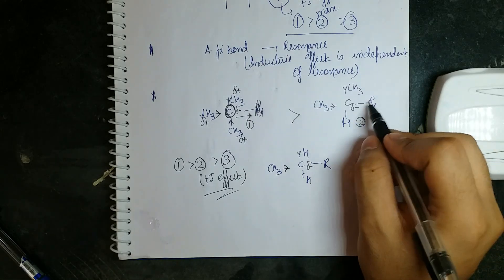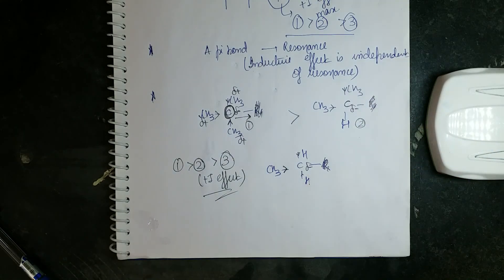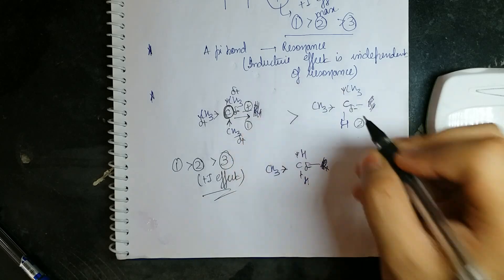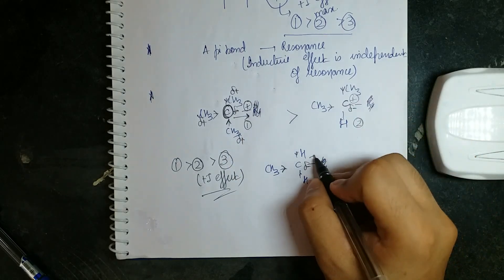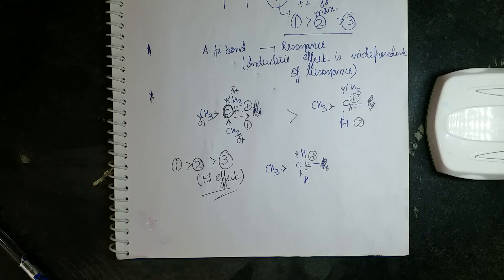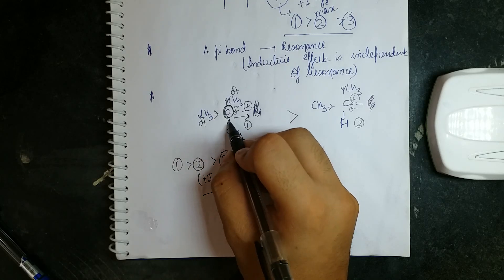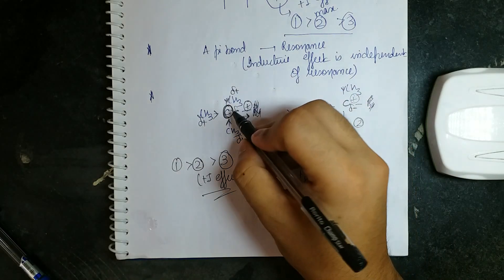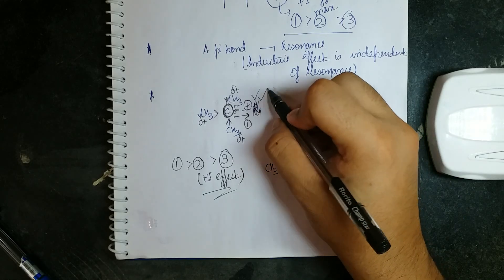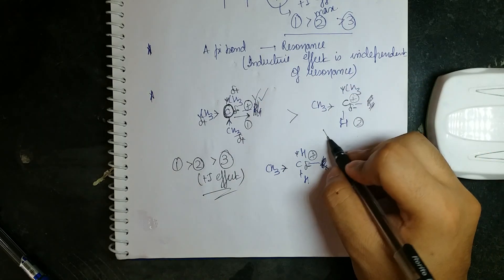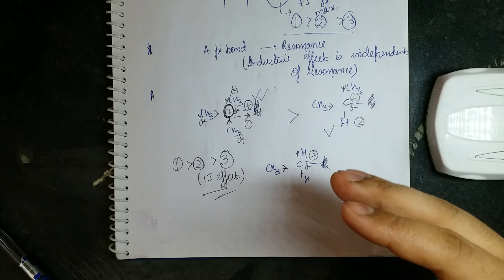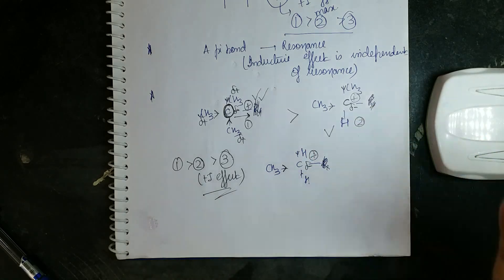Removing the R group and placing a positive charge: a positive charge is electron deficient, so it needs electron density. The attached CH₃ groups donate electron density towards the carbocation, making it more stable. This is how inductive effect applies to carbocation stability, which will be discussed further in later examples.